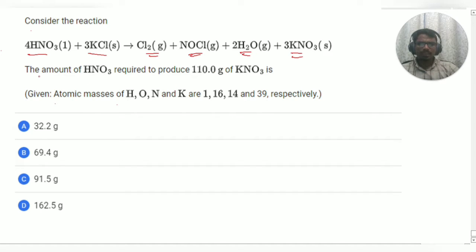So, what it is asking, it is asking the amount of HNO3 required to produce this much of KNO3. So, from here we can see 4 mole of HNO3, producing 3 mole of KNO3.